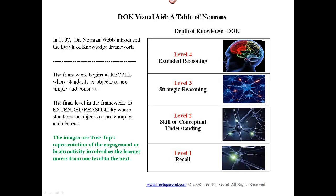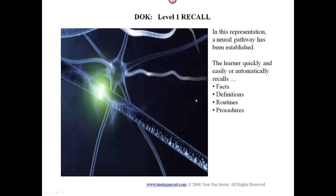The framework begins at recall, where the standards are simple and concrete, and moves all the way through level four, where the objectives are complex and abstract. The images are representations of the brain activity involved as the learner moves from one level to the next. At level one recall, the representation shows a neural pathway has been established. The learner quickly and easily — or automatically — recalls facts, definitions, routines, and procedures.